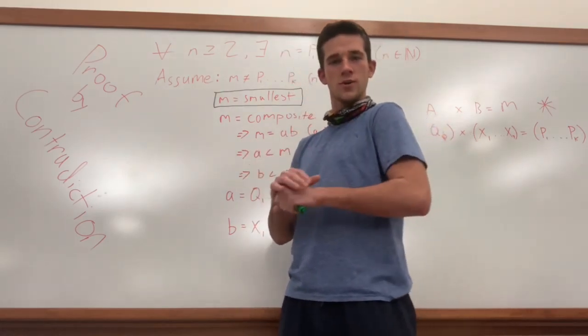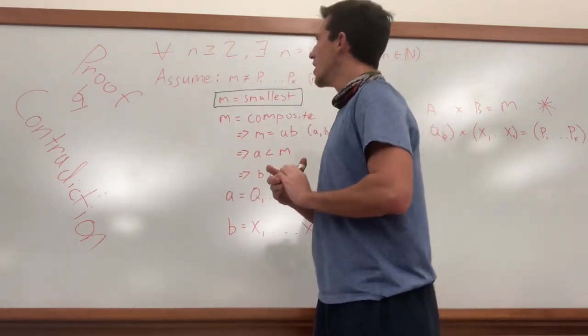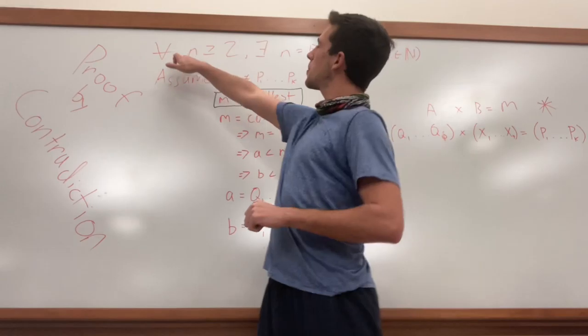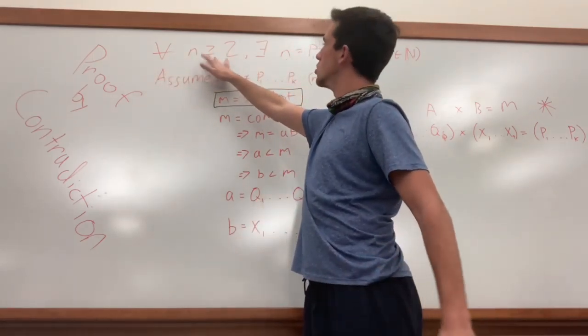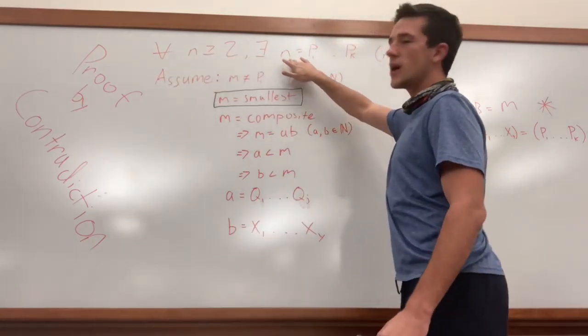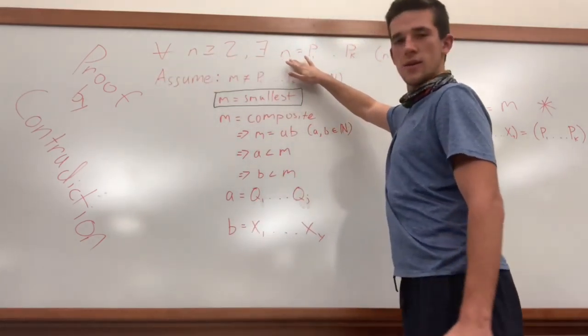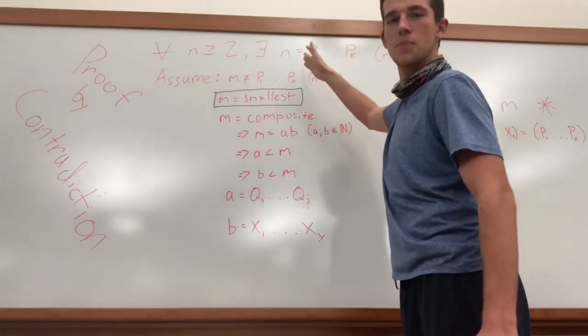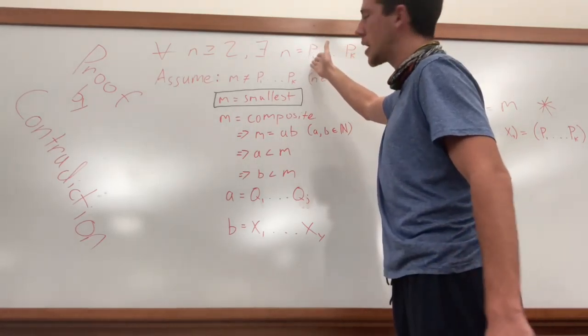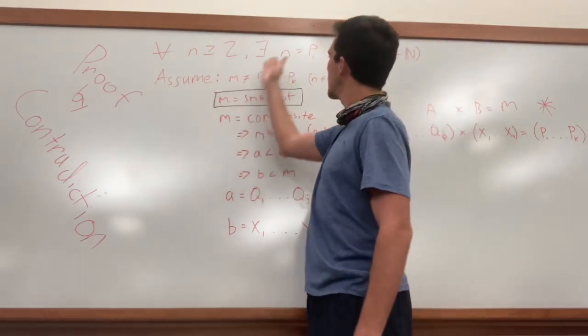So everyone follow along? Perfect. I can see you nodding. So let's start. This up here at the top, it says for every number which is greater than or equal to 2, there exists for n a product of prime numbers that is unique. That's what this p1 dot dot dot pk is. So the p represents a number that is prime times a bunch of other numbers that are prime. And that gives you n.